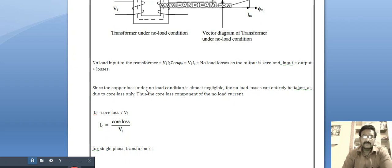Since the copper loss under no-load condition is almost negligible, the no-load losses can entirely be taken as due to core loss only. Thus the core loss component of the no-load current I naught, Ic is equal to core loss by V1.